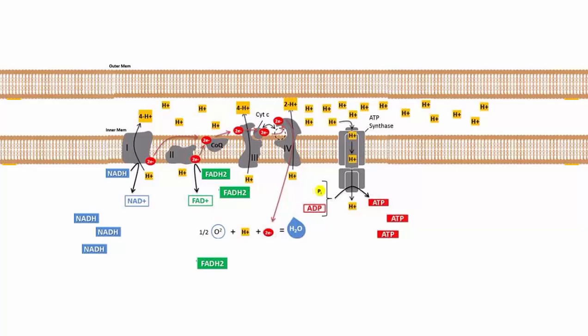All right, let's talk about what happens when a hydrogen leak channel gets inserted into your electron transport chain. This is also known as brown fat.